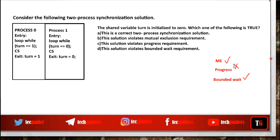But progress is not guaranteed. So this is not a correct two process synchronization solution. The answer is C — this solution violates the progress requirement.